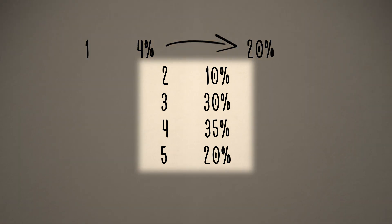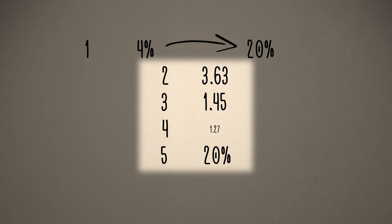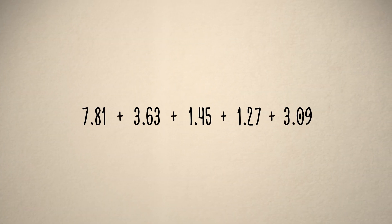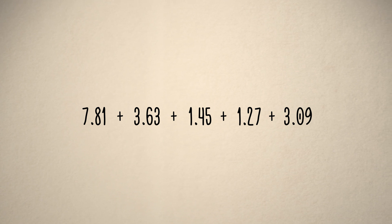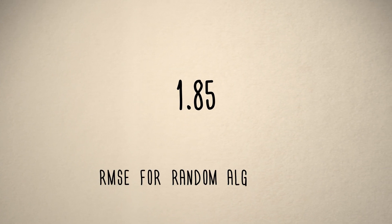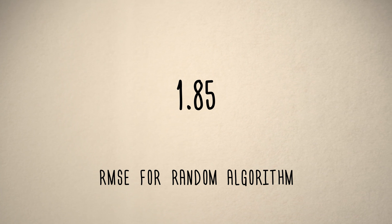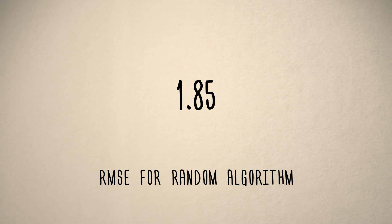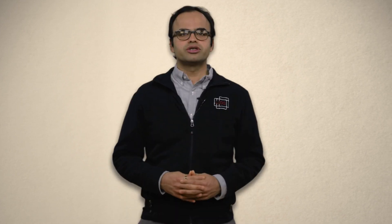Similarly, when predictions are 2, 3, 4, and 5, the resulting squared errors are 3.63, 1.45, 1.27, and 3.09 respectively. Therefore, the total average squared error under the random algorithm is (7.81 + 3.63 + 1.45 + 1.27 + 3.09) / 5, which gives us 3.45. The square root of 3.45 is 1.85, which is exactly the RMSE of the random algorithm. The algorithm that uses no information about the data achieves an RMSE of 1.85, and this should serve as a baseline for the performance of algorithms we shall evaluate.